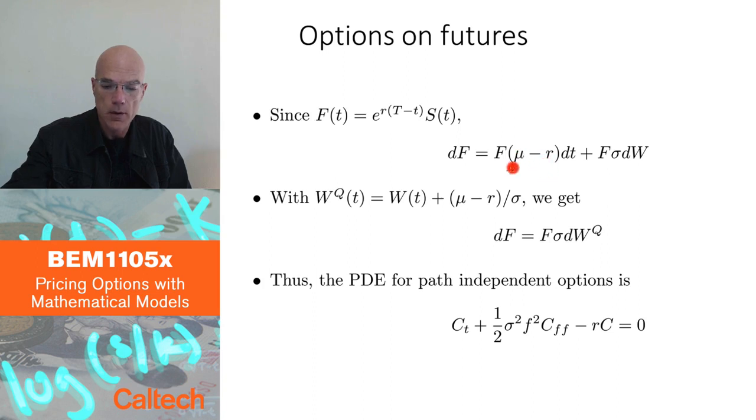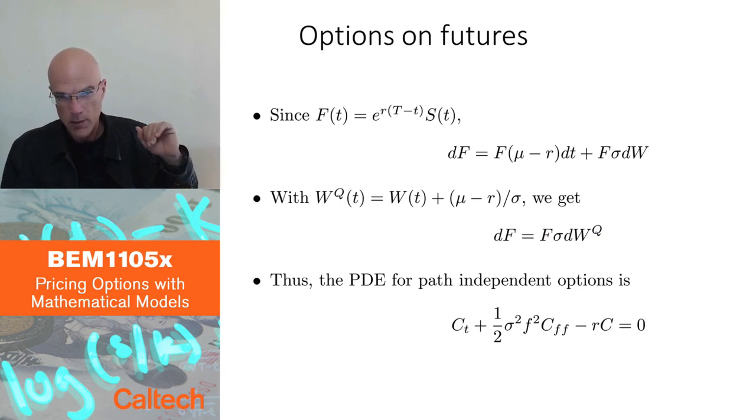Not only mu but also r will cancel and I will get that the futures price without discounting is a martingale under the pricing probability. There's a zero dT term. The futures price itself is already a martingale, basically because of marking to market. You get rid of the interest rate.